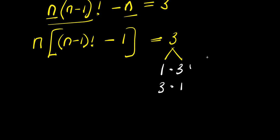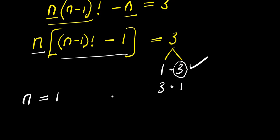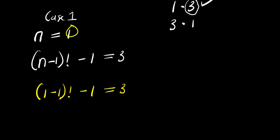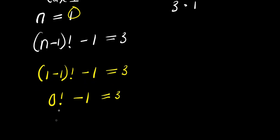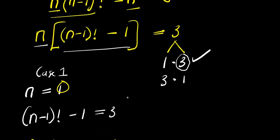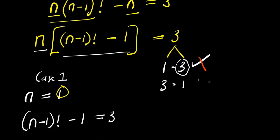Starting with case one, n equals 1 and n minus 1 factorial minus 1 equals 3. Substituting n equals 1, we have 1 minus 1 factorial minus 1, which should equal 3. That is 0 factorial minus 1. Since 0 factorial is 1, we get 1 minus 1 equals 0, which is not 3. So this combination is wrong and we cancel it.